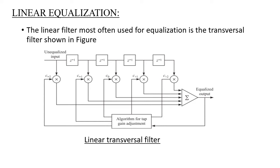In linear equalization, the linear filter most often used is the transversal filter shown in the figure. It consists of an unequalized input, and tap weight coefficients that are used to adjust the amplitude and phase of the input signal. Different input signals varying in time and amplitude are all summed at the output.